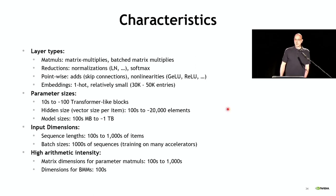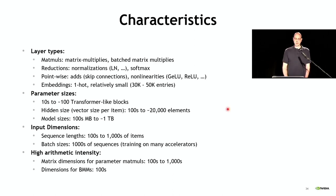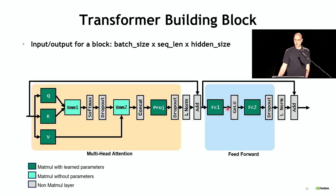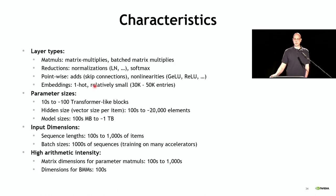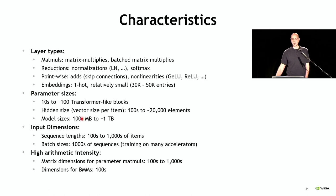Transformer networks consist of tens to hundreds of blocks stacked in sequence, each with its own operations and learned weights. The hidden size — dimensionality of each token's vector — varies from hundreds to thousands, up to close to 20,000 for the largest models. Model sizes range anywhere from 100 megabytes to approaching a terabyte for large models like GPT-3 and Megatron. Sequence lengths are hundreds to thousands of tokens. Batch sizes can get large for training on large systems. Arithmetic intensity is generally high due to the number of matrix operations involved.